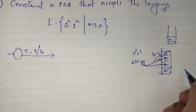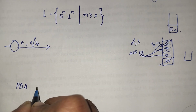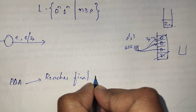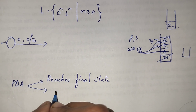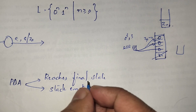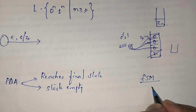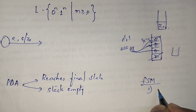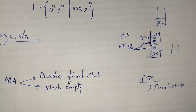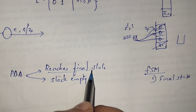Then we reach Z0, and finally we pop out Z0, so the stack becomes empty. A pushdown automata accepts a string in two cases: when it reaches the final state, or when the stack is empty. In contrast, a finite state automata accepts a string only when it reaches the final state. But for a pushdown automata, acceptance is either reaching the final state or the stack becoming empty.